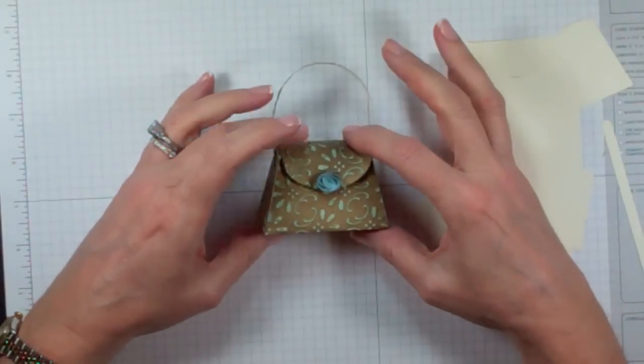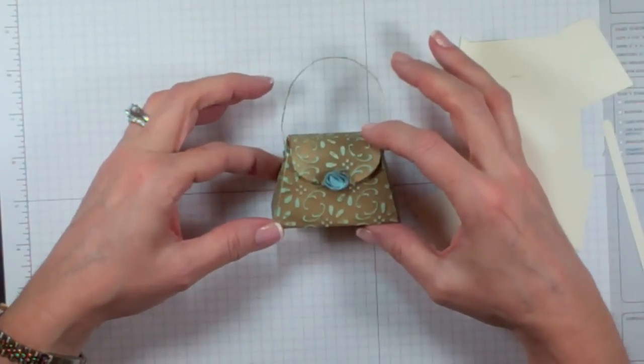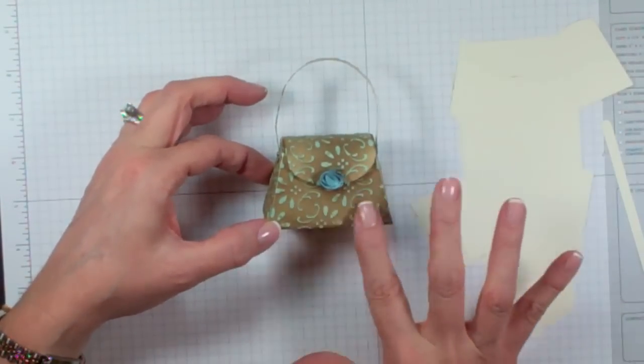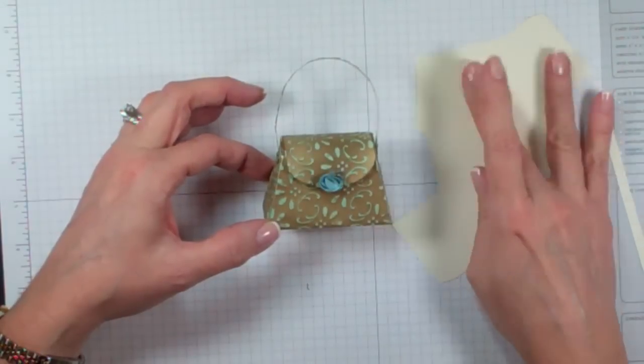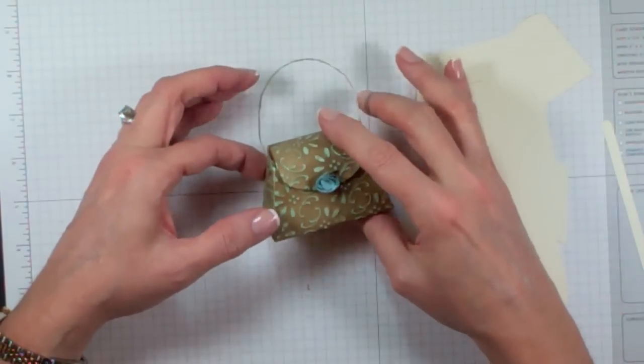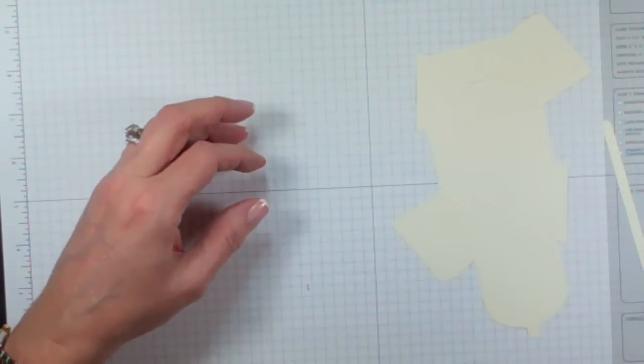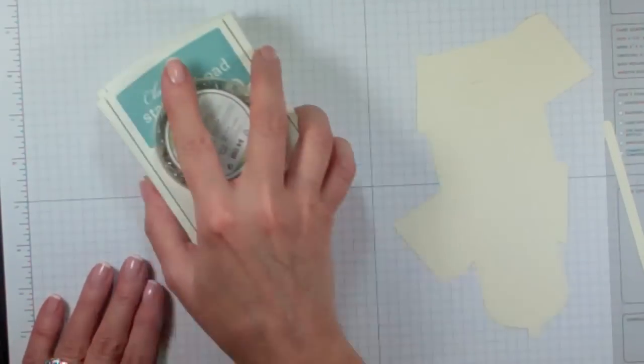This month the topic of conversation in our Stampin' Success magazine was acrylic distress, made with acrylic paint which is far too messy for some people, including me. So I'm going to show you how to do it using a classic ink pad.